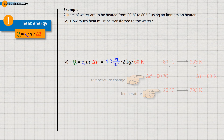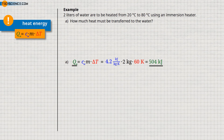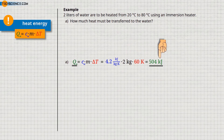If we now use the temperature change of 60 kelvin in the given formula, then we finally get an amount of heat of 504 kilojoules which are required to heat the water. Note that the specific heat capacity was expressed by the unit kilojoules and therefore the amount of energy is also calculated in this unit.